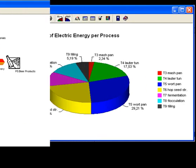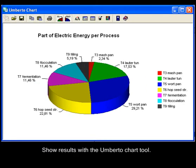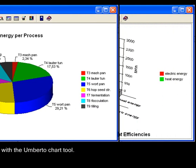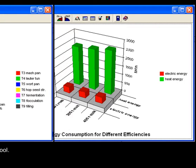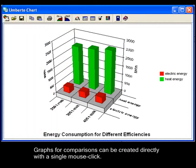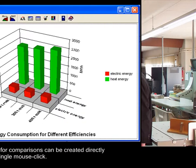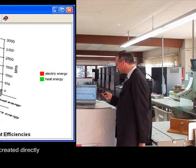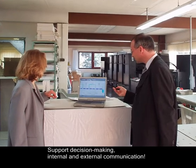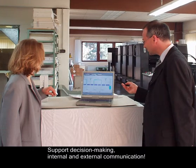For focusing on selected results from the inventory table, just call the Umberto chart tool. Graphs for comparison can be created directly with a single click of a mouse. Results from the material and energy flow model can be used for decision making support, for controlling, as well as internal and external communication.